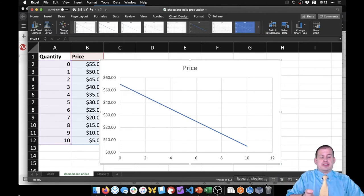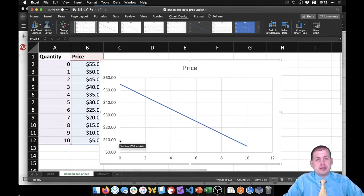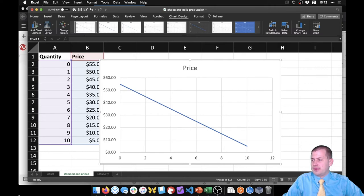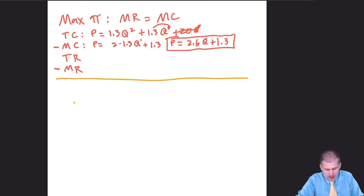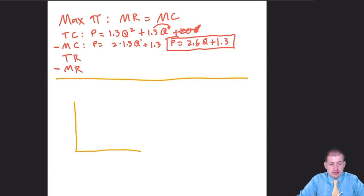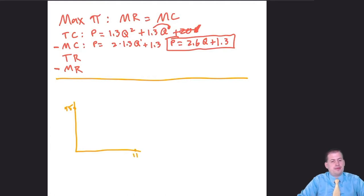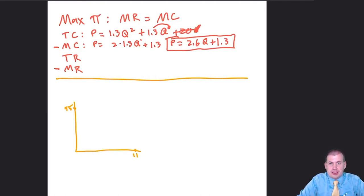We can figure out a formula for this demand curve using y = mx + b, since it is just a straight line with no changing slopes. We can look at where the y-intercept is and figure out the slope. Based on the graph in Excel, the line starts at 55 on the y-axis and ends at 0 when quantity equals 11 — those are the points we have in this plot.